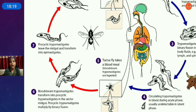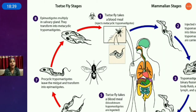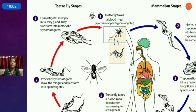The procyclic trypomastigotes leave the midgut and transform into epimastigotes. Epimastigotes undergo further structural changes and then move into the salivary gland, where they multiply and transform into metacyclic trypomastigotes.